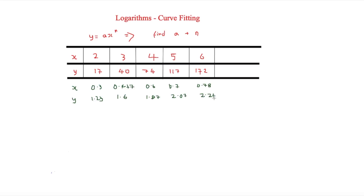Now we need to find the gradient. Using Δy/Δx, we calculate the change in log y over the change in log x: 1.01 over 0.478, which equals 2.1. So our gradient is 2.1. Comparing y = mx + c with our derived form y = n·log x + log a, we can write y = 2.1x + c.